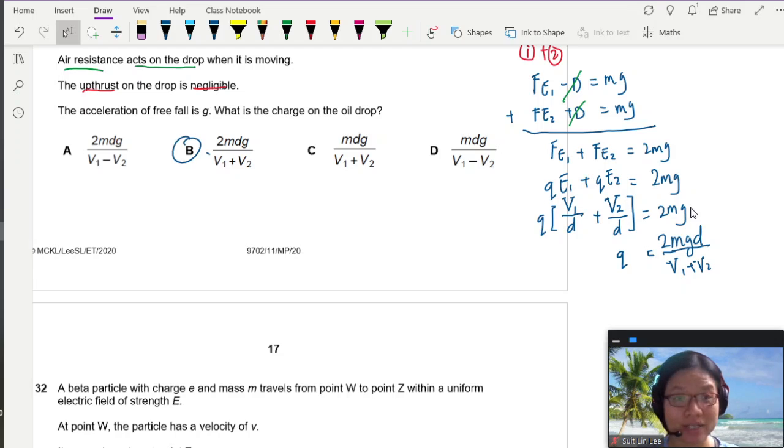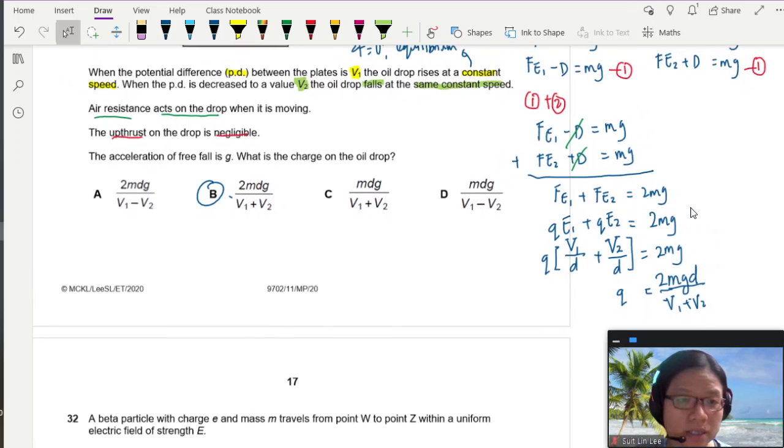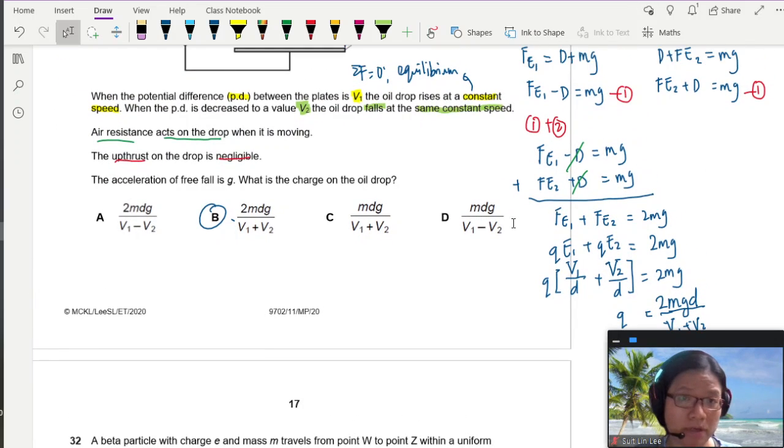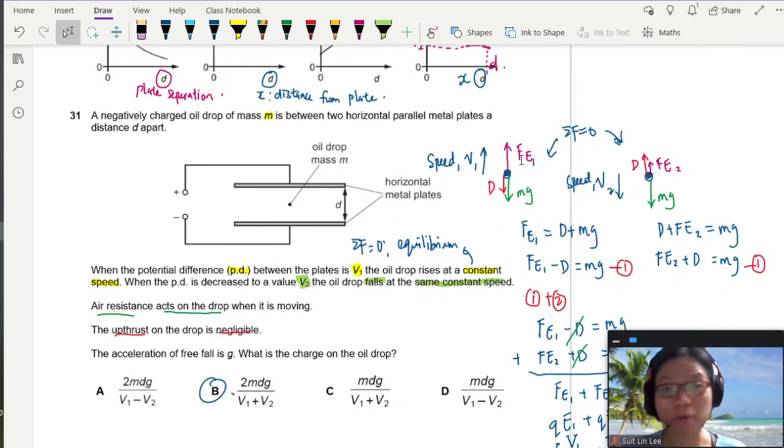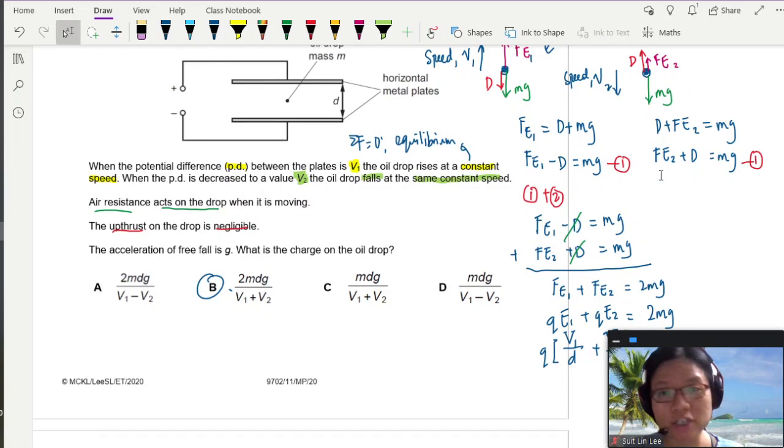All right? So that's it. So this question is pretty similar. We have done quite a few in this paper, actually. Questions that require you to draw the diagram of forces and use F equal to mA, or in this case, equilibrium net force is zero, forming equations and trying to either solve them or find an expression. All right? So I'll see you in the next question. Bye-bye.